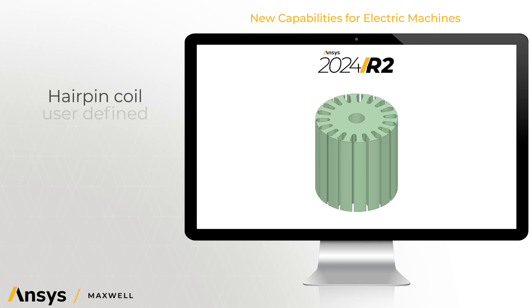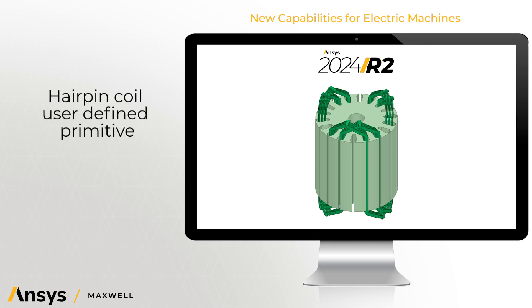Hairpin coils are used throughout the industry because of the advantages in performance and manufacturing. This user-defined primitive enables machine designers to more easily model these in both 2D and 3D.